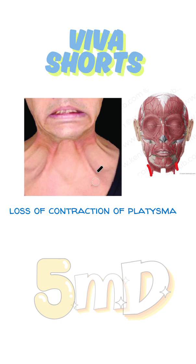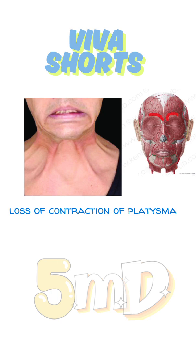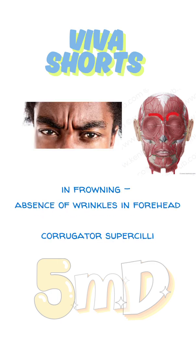Here the platysma is contracted normally. Loss of contraction means that if you ask the patient to perform the platysma movement and they are unable to do it, it indicates paralysis of the platysma due to facial nerve palsy.